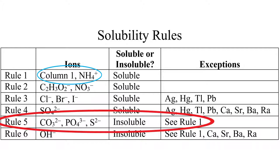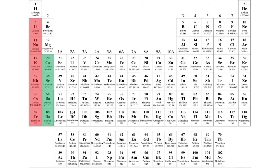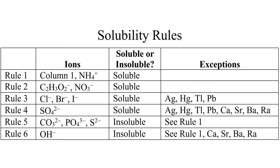The last solubility rule tells us that compounds that have an anion of hydroxide are all insoluble, except for the ones that have a cation described by rule one, or ones from the bottom of column two of the periodic table — calcium, strontium, barium, or radium. These six solubility rules cover tens of thousands of different compounds, and all the compounds that we'll work with in this course.